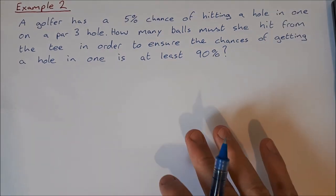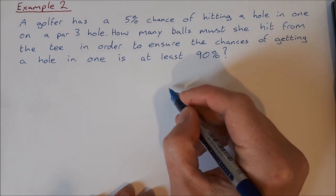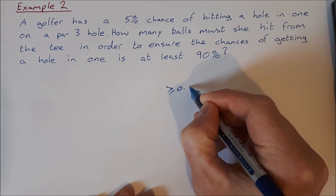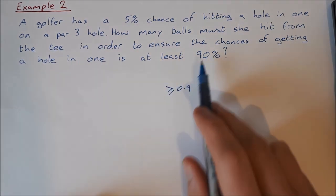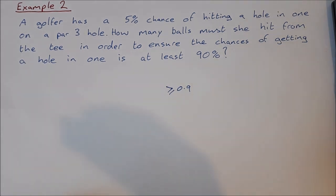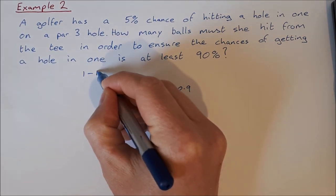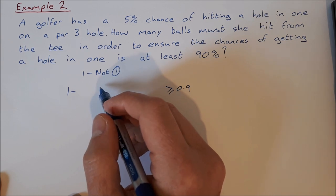For this, we set up an inequality. The chances of getting a hole-in-one must be at least 90%, so our inequality is P ≥ 0.9. Since she could get one, two, or more hole-in-ones, we use the complement: P(at least one hole-in-one) = 1 minus P(not getting any hole-in-one).